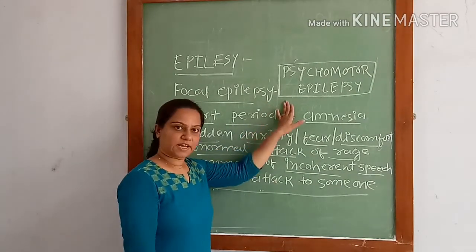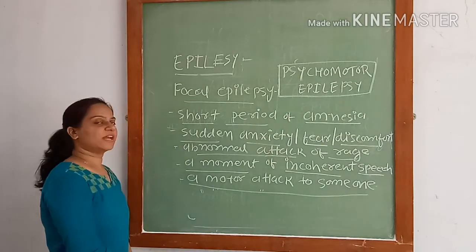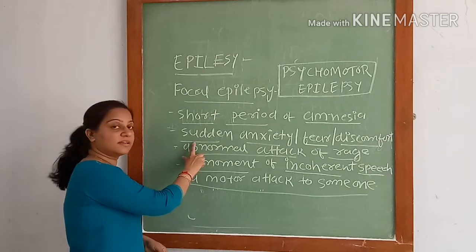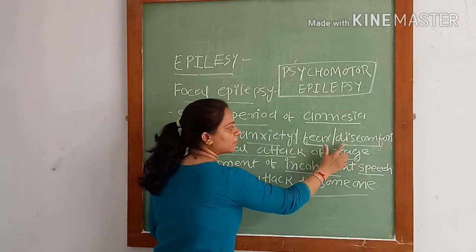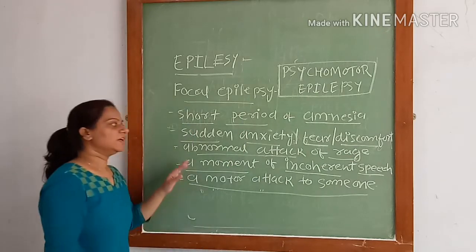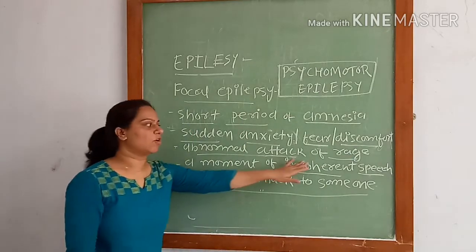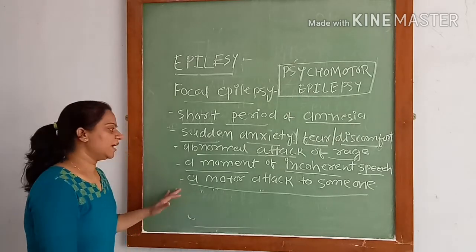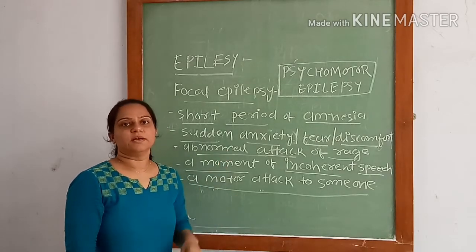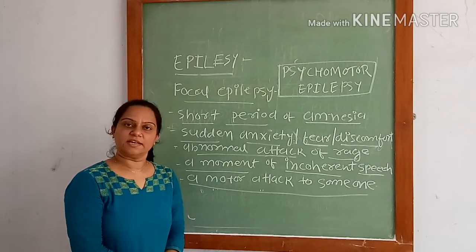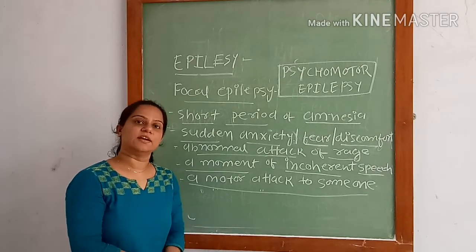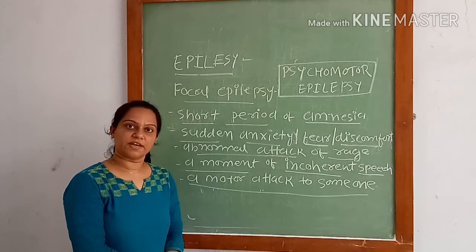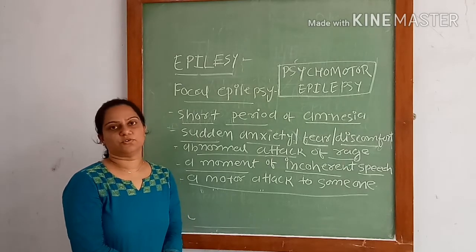In psychomotor epilepsy, there will be a short period of amnesia, followed by sudden anxiety, fear, or discomfort. There will be an abnormal attack of rage, a moment of incoherent speech, and a motor attack. The person will not remember anything they did during the attack, but at the time of the attack, the person is aware of the activity but cannot control it.